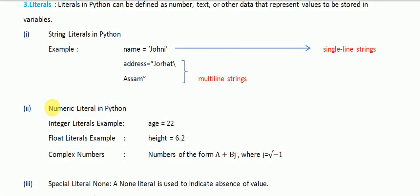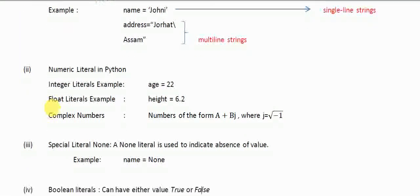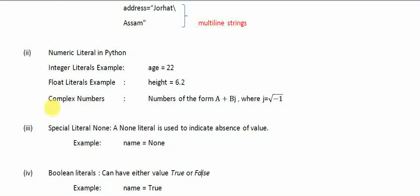So the different types of literals are: first, string literal; next, numeric literal; then the special literal None; and finally, boolean literal. That's all for this tutorial — thank you.